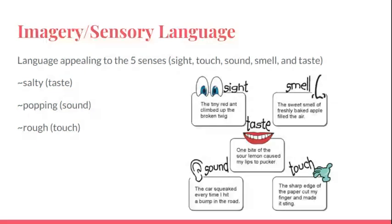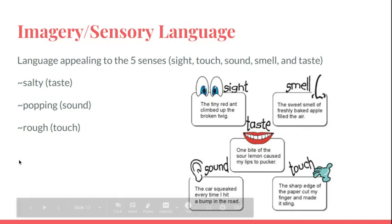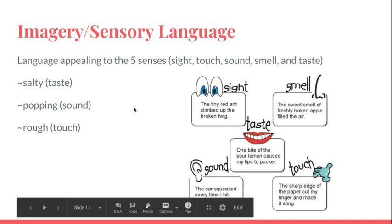Imagery, or sensory language, refers to any words that are written that appeal to the five senses. This could be in a simile or a metaphor, but it doesn't have to be — any time the tiny red ant climbed up the broken twig, that helps us see it.